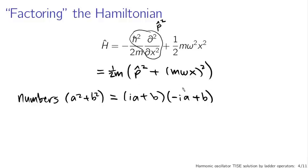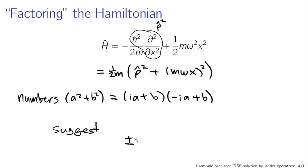You can't actually factor operators like this the same way as numbers, because operators don't necessarily behave the same way numbers do. But this suggests looking at things like ±ip̂ + mωx̂. These are what we're considering now — I haven't justified this beyond saying it kind of looks like maybe it would factor. These things are called ladder operators, and they're traditionally defined as: â± = 1/√(2ℏmω) times (∓ip̂ + mωx̂). The constant out front just makes things nicer overall.